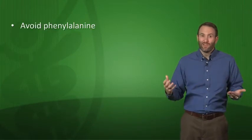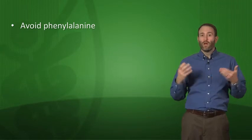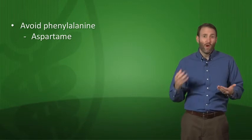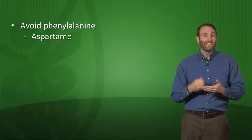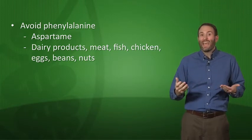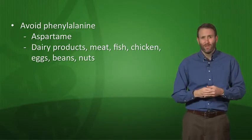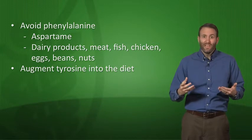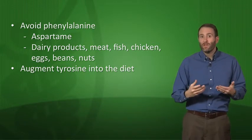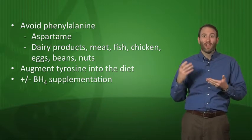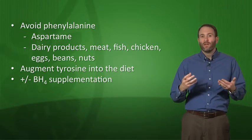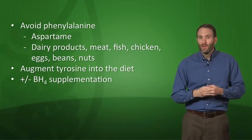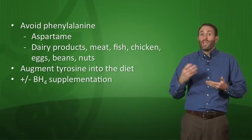Treatment involves avoiding phenylalanine. Foods high in phenylalanine include aspartame (an artificial sweetener) and high-protein foods like dairy, meat, fish, chicken, eggs, and beans. You also need to supplement tyrosine in the diet since it's now essential. If it's a cofactor deficiency, supplementation with tetrahydrobiopterin is also necessary. This treatment needs to be accomplished within the first three weeks of life.